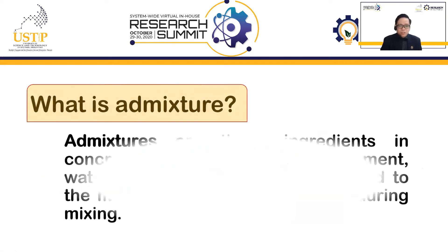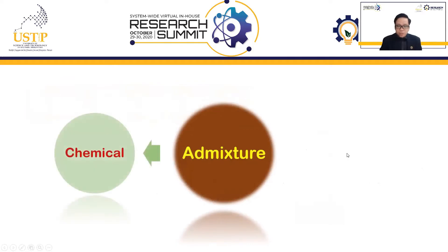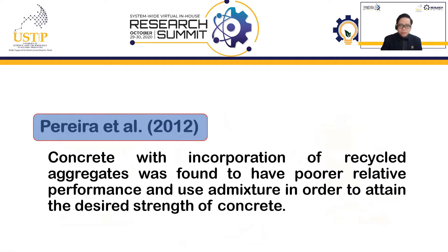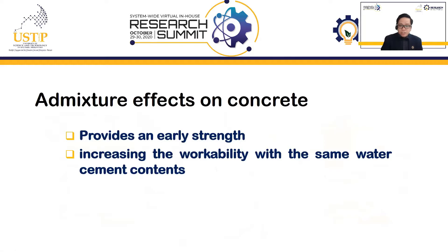What is admixture? Admixtures are those ingredients in concrete other than Portland cement, water, and aggregates that are added to the mixture immediately before or during mixing. Admixtures can be chemical and mineral. In my study, I am using chemical admixtures. According to the study of Pereira et al. 2012, concrete with the incorporation of recycled aggregates was found to have poor relative performance and requires admixture in order to attain the desired strength of concrete. Some of the admixture effects on concrete include providing early strength and increasing workability with the same water-cement contents.